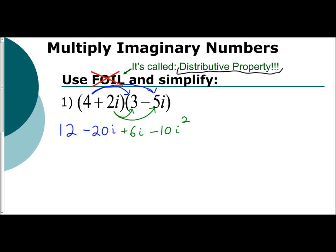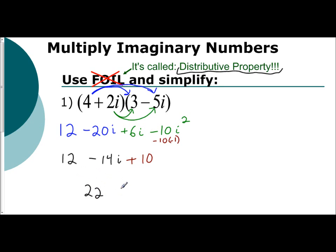And then you just combine like terms. 12 we can leave alone. Negative 20i plus 6i is negative 14i. And here we need to remember that i squared is negative 1. So really it's negative 10 times negative 1, which is a positive 10. Then combine like terms: 12 and positive 10 are real numbers, so you get 22 minus 14i.